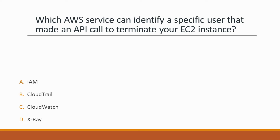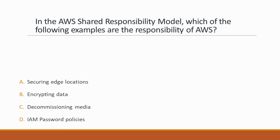Next question: Which AWS service can identify a specific user that made an API call to terminate your EC2 instance? Options: A. IAM, B. CloudTrail, C. CloudWatch, D. X-Ray. Correct answer is option B, CloudTrail, because AWS CloudTrail is a service that enables governance, compliance, operational auditing, and risk auditing of your AWS account. With CloudTrail, you can log, continuously monitor, and retain account activity related to actions across your AWS infrastructure.